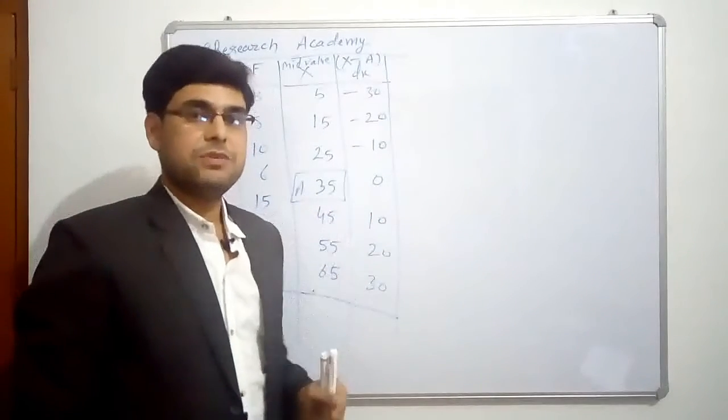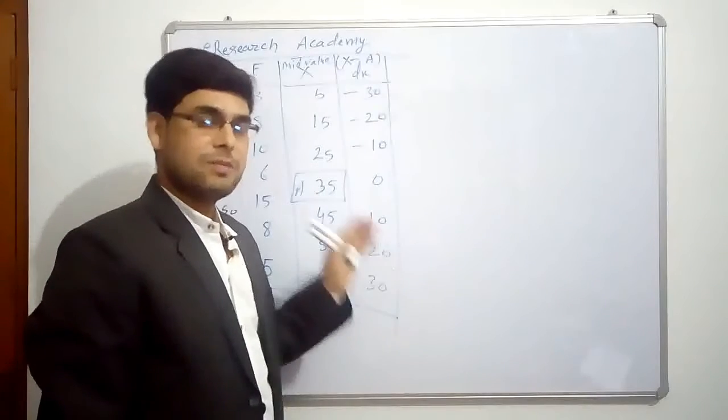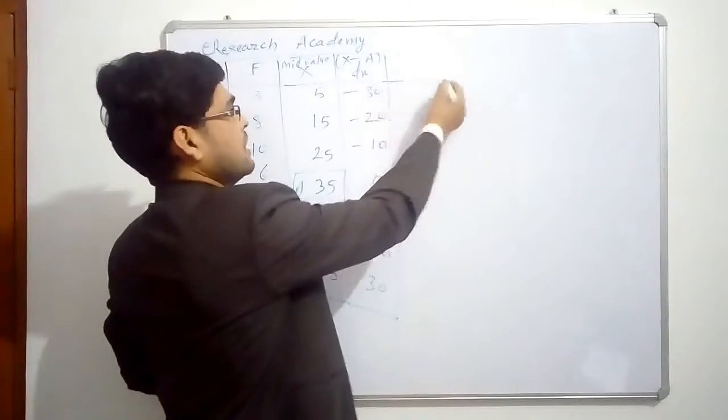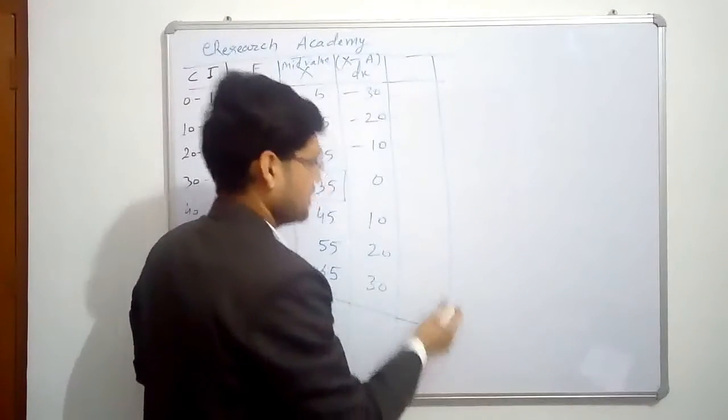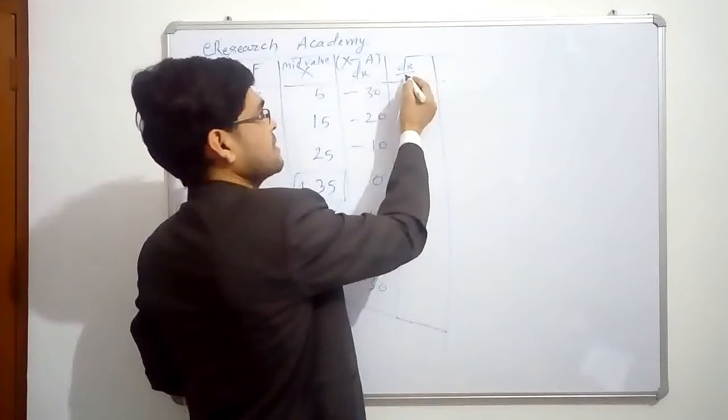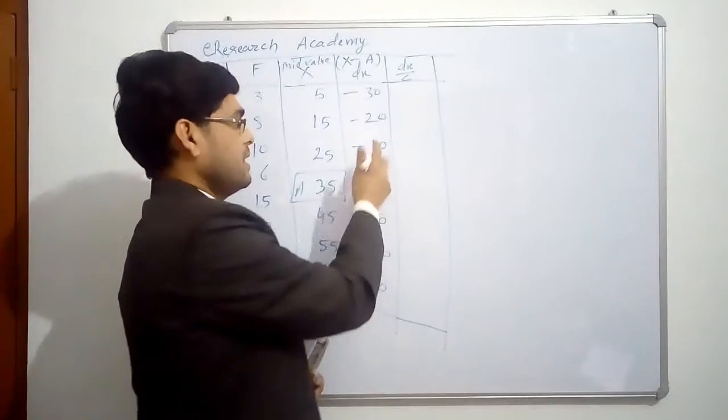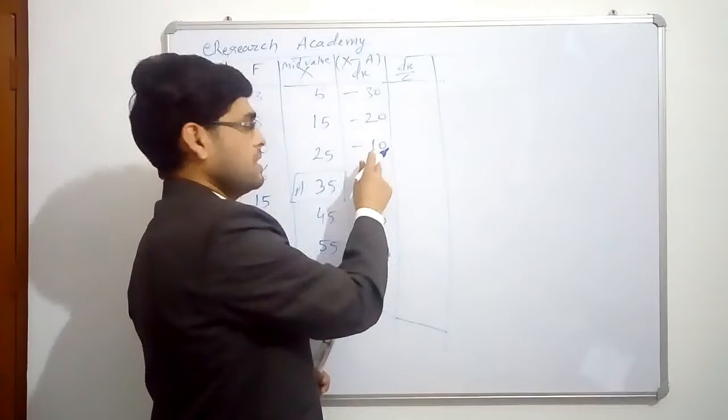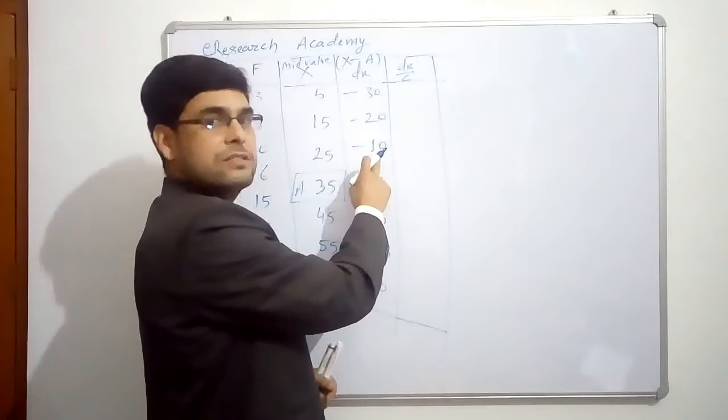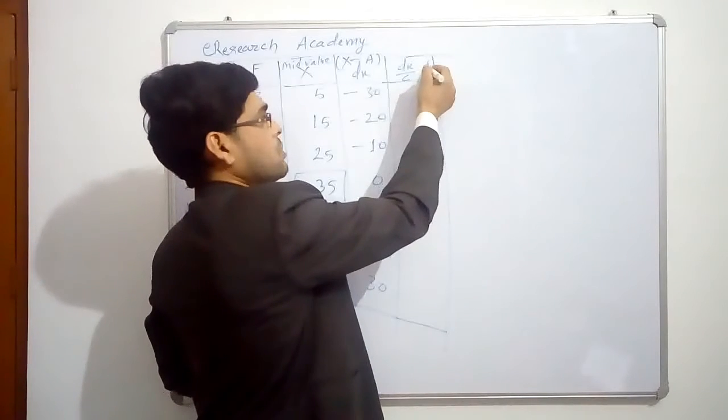So under step deviation method, only one column is extra. And this is nothing, it is just simplification of our calculation. Simplification by way of reducing or you can say minimizing these values. This minimization we do by dividing this dx by a common factor by which we can divide all these values. And the dividend must be in absolute terms. So these values we can divide by 10.